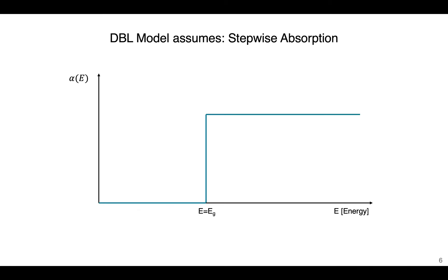We don't have any non-radiative recombination, meaning we don't have the electron relax and recombine in a defect state, or have Auger recombination. The third assumption is stepwise absorption: for any material, we have a bandgap E = EG. If the photon has energy equal to or greater than the bandgap, it's absorbed; if less, it's not absorbed. This simplifies the model by not assuming a specific real material. Real materials will have more of a curved absorption rather than a step absorption.